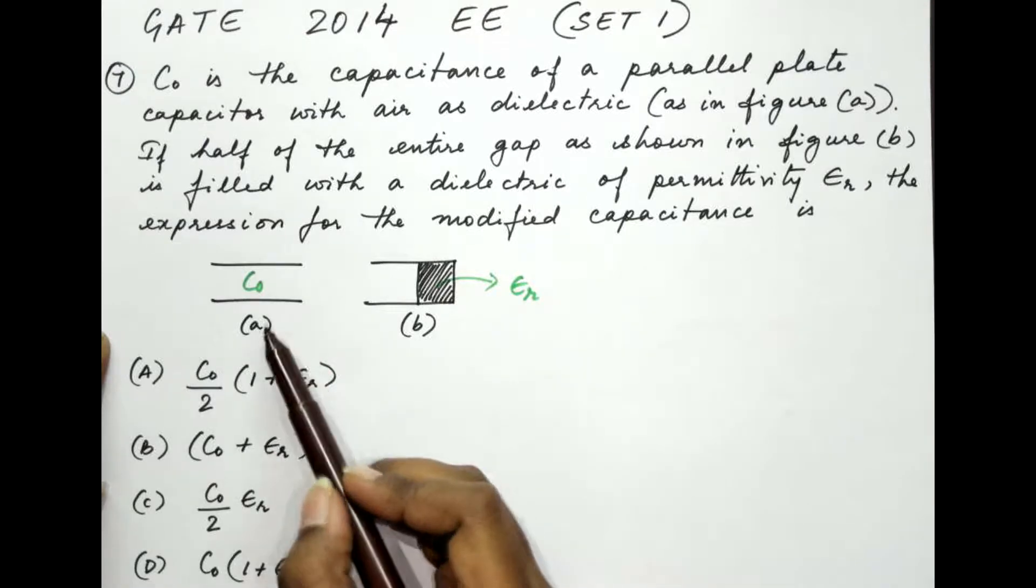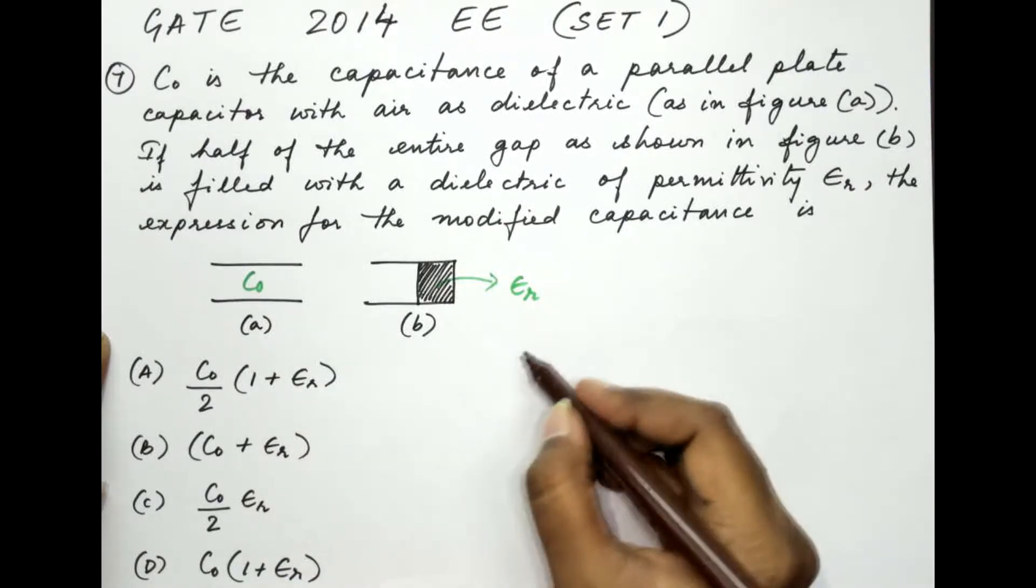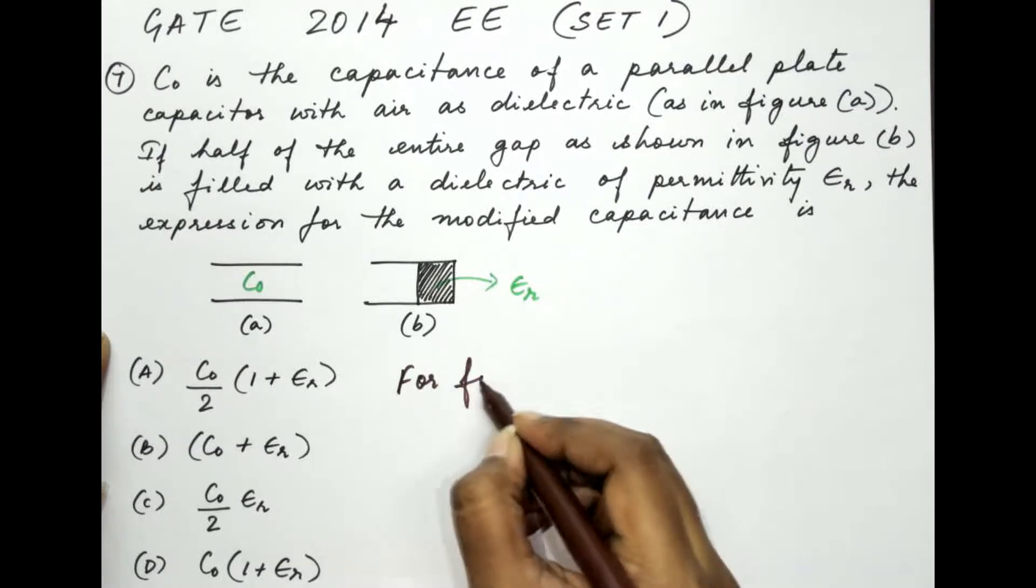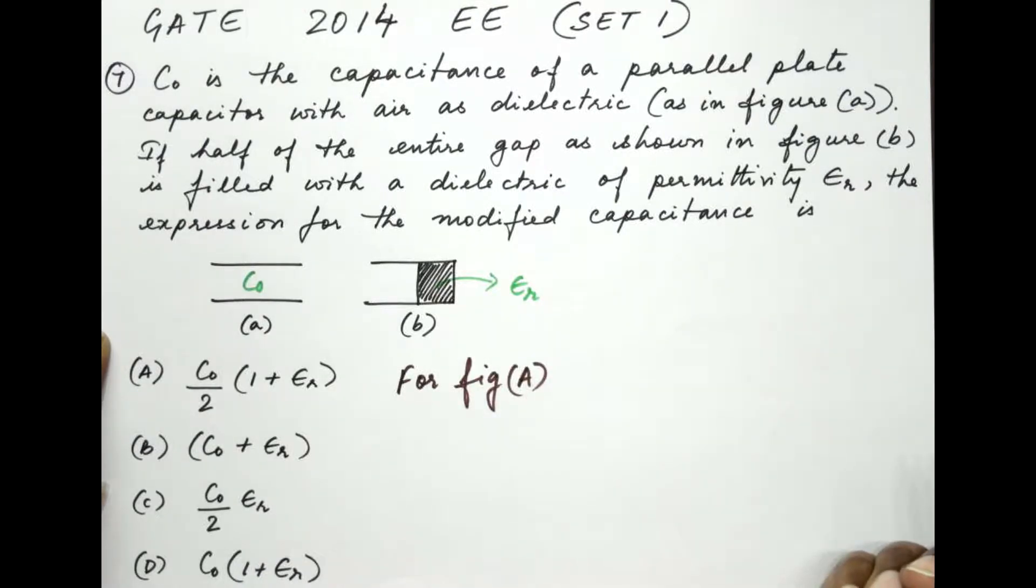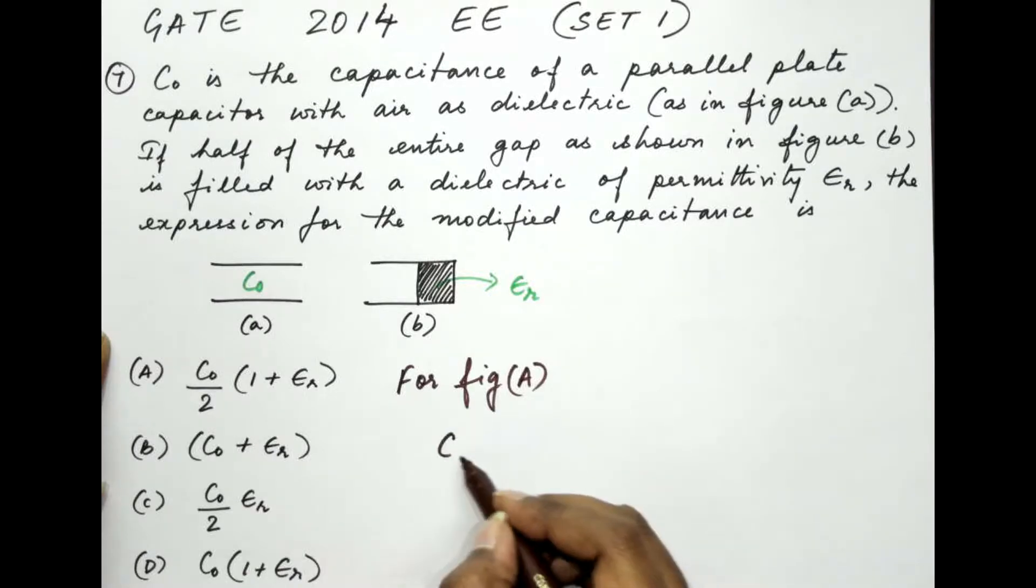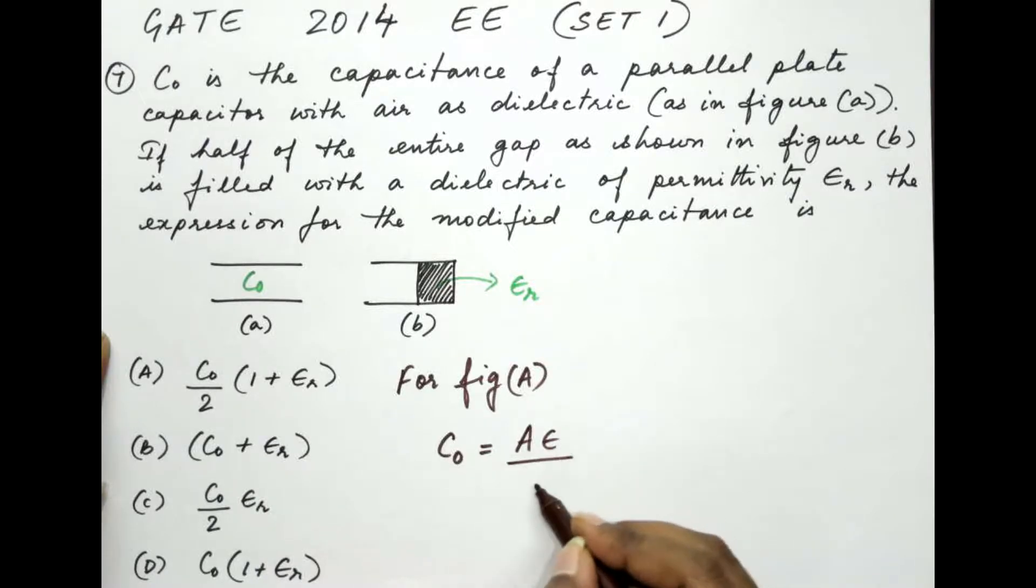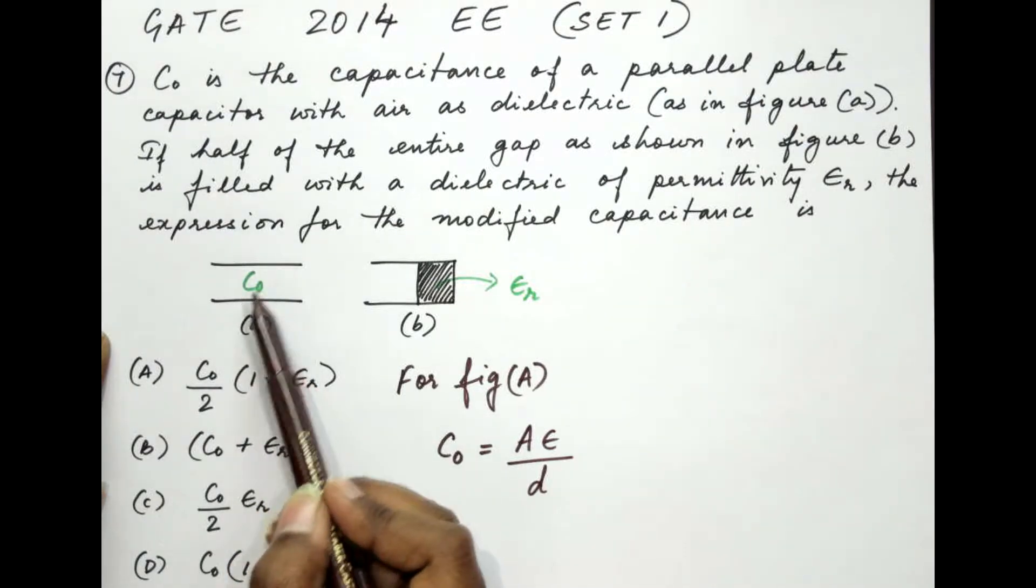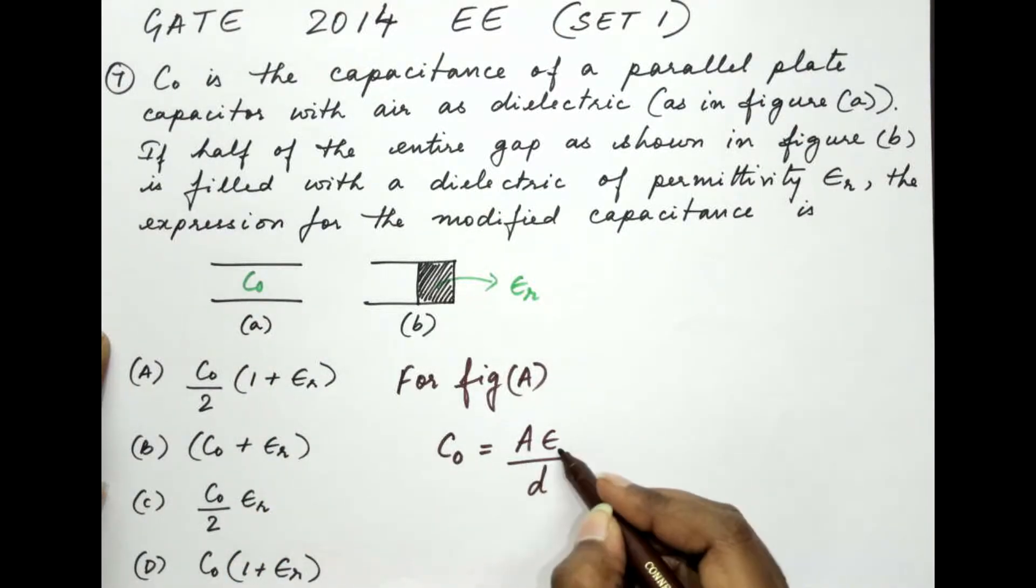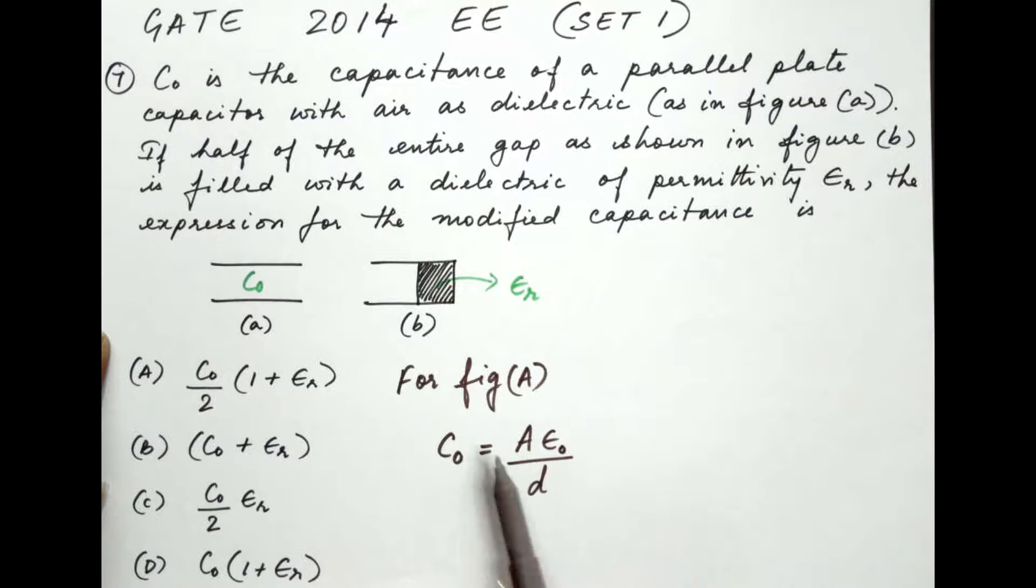If we take a look at figure A first. For figure A, let's write down the expression for capacitance. The general expression is the area multiplied by the permittivity divided by D, separation between the plates. So the expression is A epsilon by D. Now since here we have the capacitor that has the dielectric of air, we can call this as A into epsilon naught divided by D. So this is the expression for capacitance for the first figure.